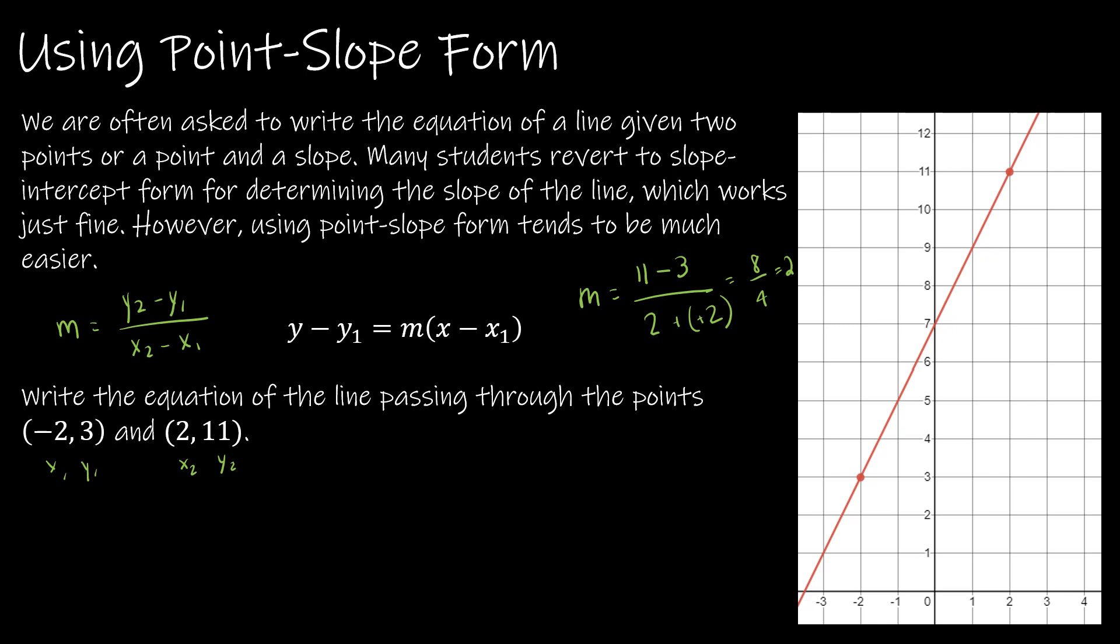So what often happens is students will say, that's y equals 2x plus b. And then they will plug in a point, say, 2, 11. 11 equals 2 times 2 plus b. 2 times 2 is 4. And then they'll subtract 4 from each side. So their equation is y equals 2x plus 7. Totally fine to do it that way. However, it's also very useful to know how to use point-slope form.